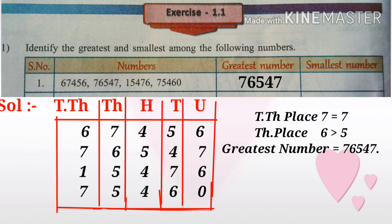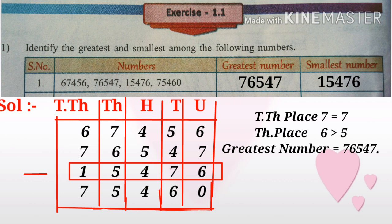For the smallest number, observe the ten thousands place — the smallest digit is 1. So fifteen thousand four hundred seventy-six is the smallest number.